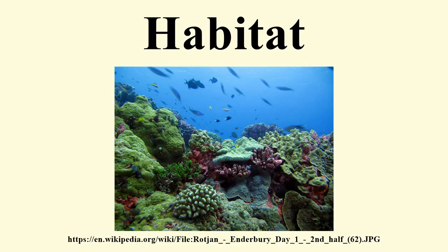The yellow star thistle, Centaurea solstitialis, is a botanical monotypic habitat example, currently dominating over 15 million acres in California alone. The non-native freshwater zebra mussel, Dreissena polymorpha, which colonizes areas of the Great Lakes and the Mississippi River watershed without its home range predator control, is a zoological monotypic habitat example.